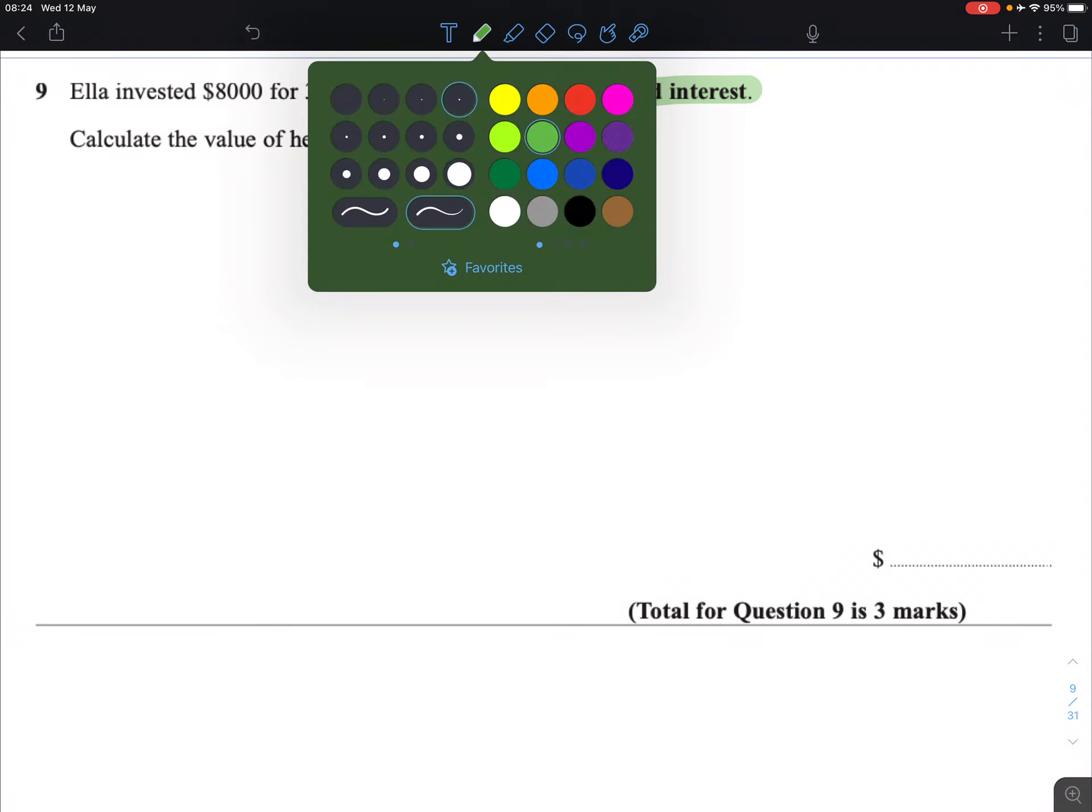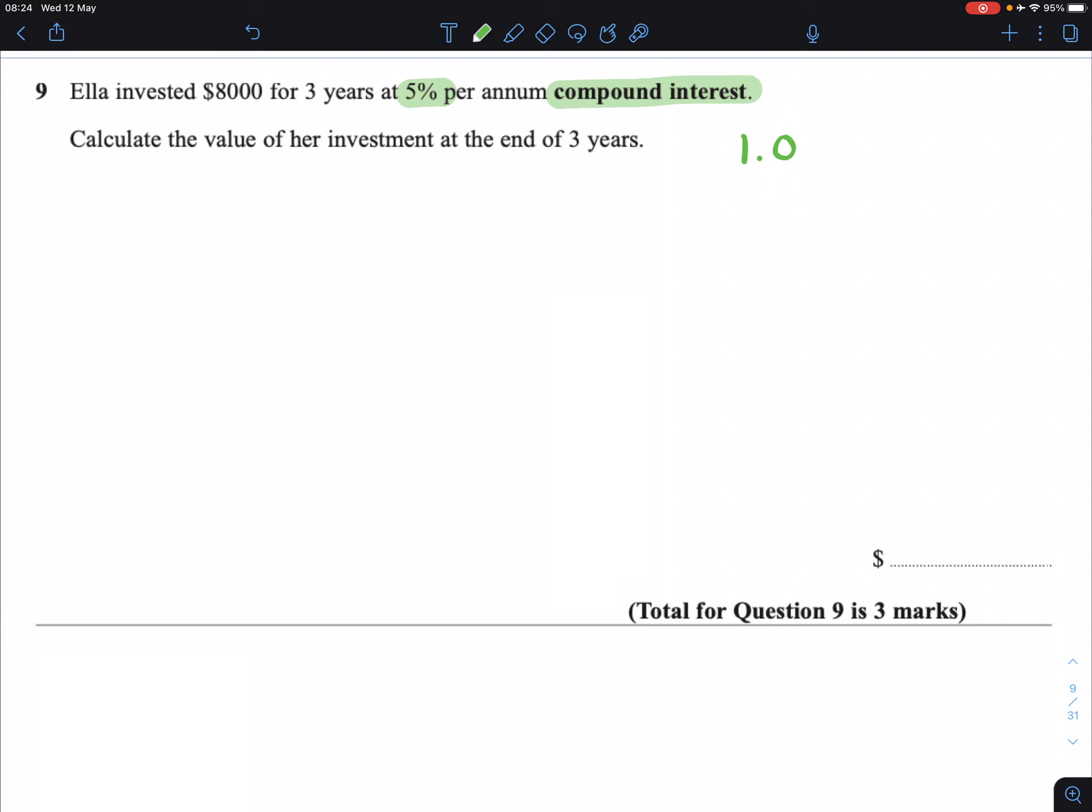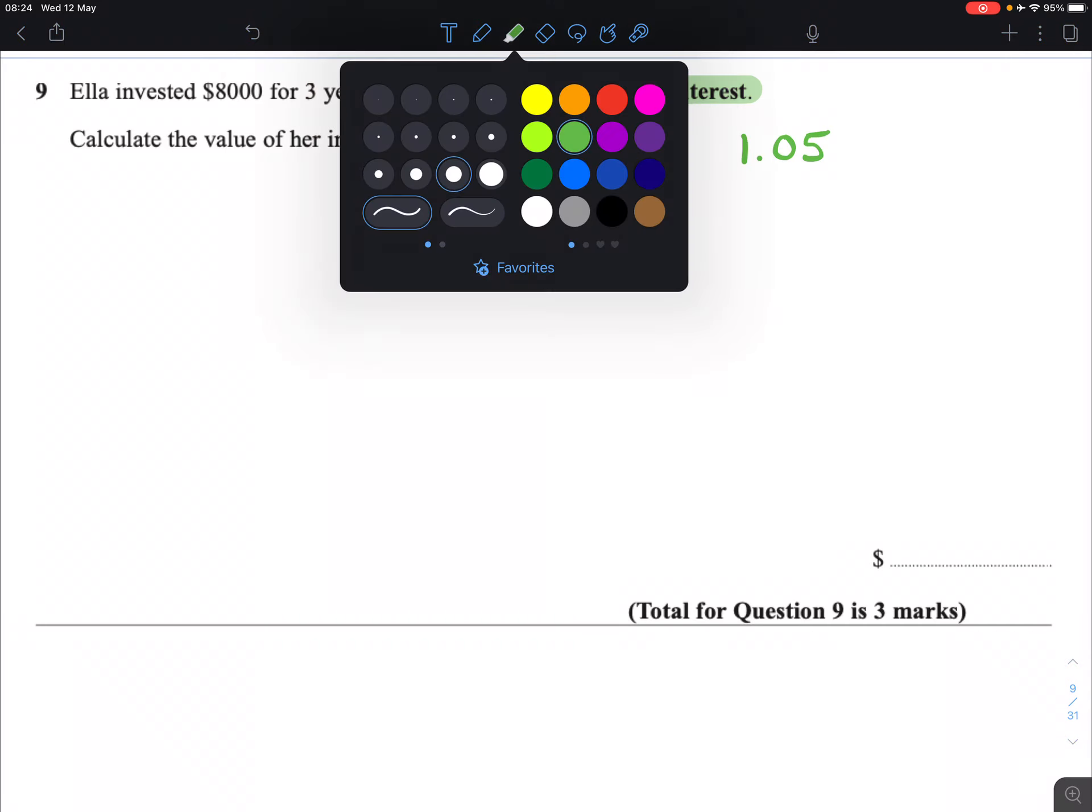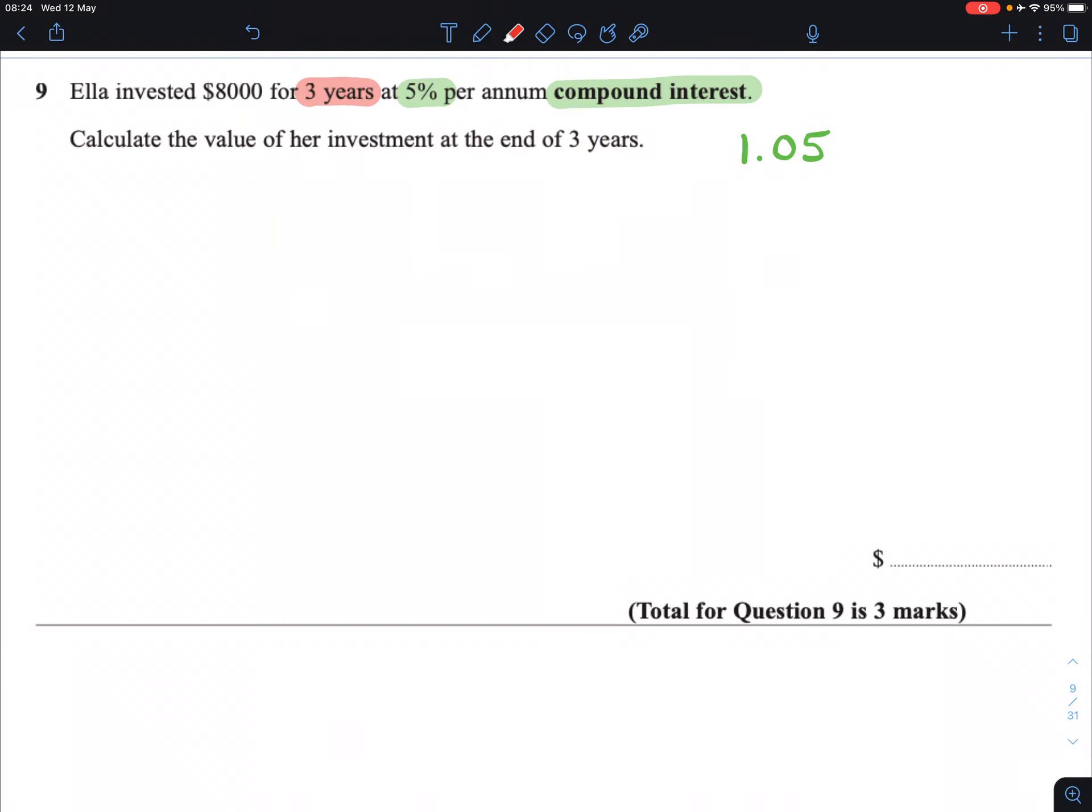So the decimal involved with this question is 1.05 because of the fact that we are gaining. We start off with 8,000 and we are going to be doing 3 percentage changes. 3 times we are going to be doing a percentage change.